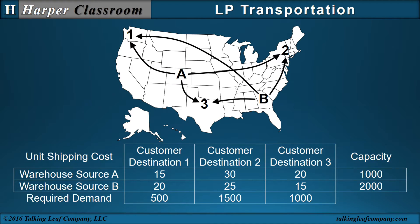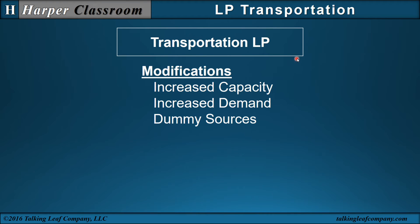In Part 1, we saw the Transportation LP where we shipped items from sources A and B to Destinations 1, 2, and 3, to not exceed the capacity of our sources, meet the demand of our destination sites, and minimize shipping cost. In this video, we'll take the Transportation LP and introduce modifications of increased capacity, increased demand, and then introduce dummy sources to solve a modified version of an infeasible LP.